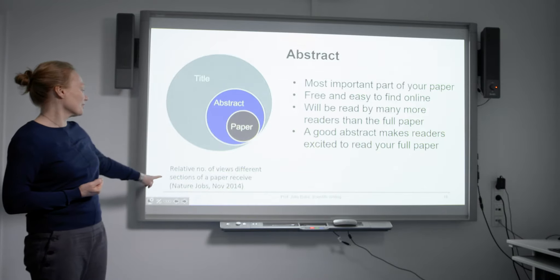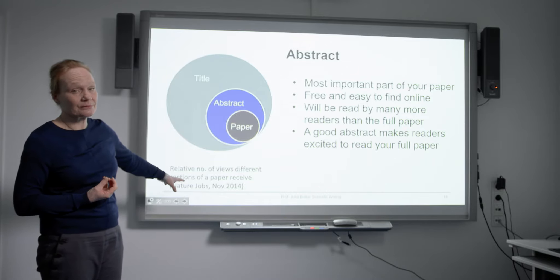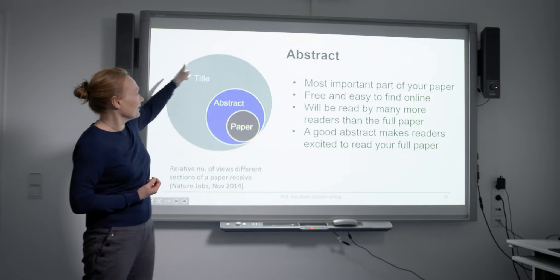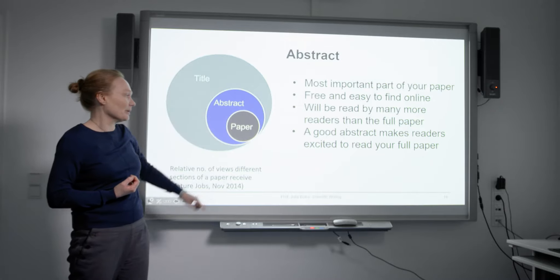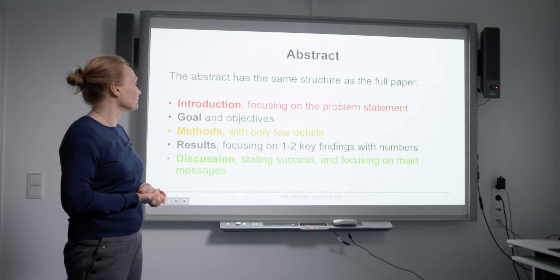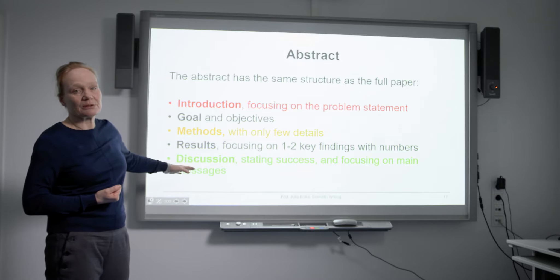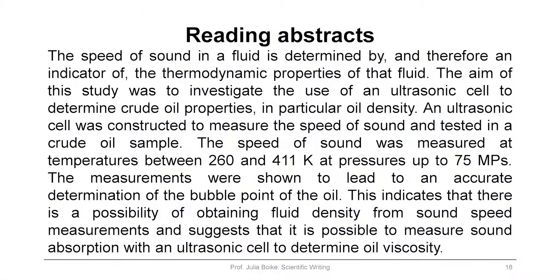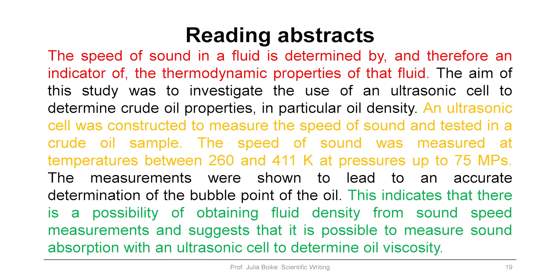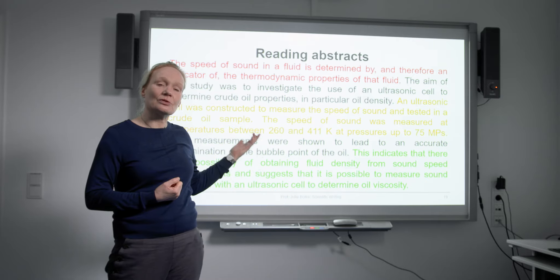Here are numbers showing views different sections of a paper receive. The title gets the biggest hit — most people only read the title, then the abstract, then the paper. The abstract has the same structure as the paper: introduction, methods, results, and discussion, outlined in different colors. I will show an example of a dissected abstract following this structure. The abstract shown has highlighted sections: red for introduction, then the method section, results in black, and green for the discussion. Just following this structure, you can see that the abstract is easier to read when you know the structure is embedded.